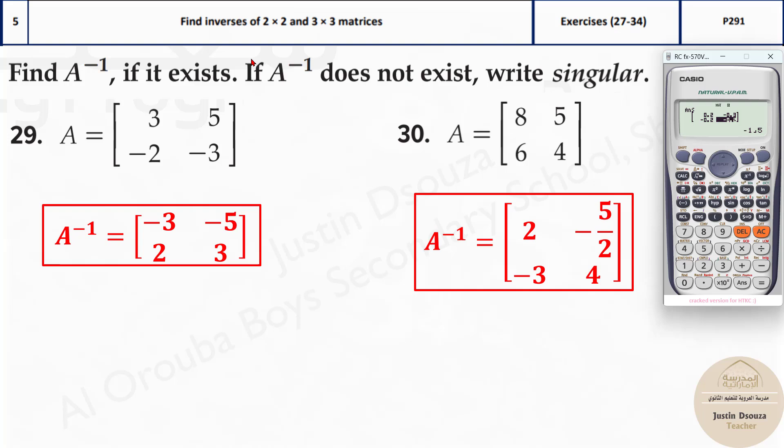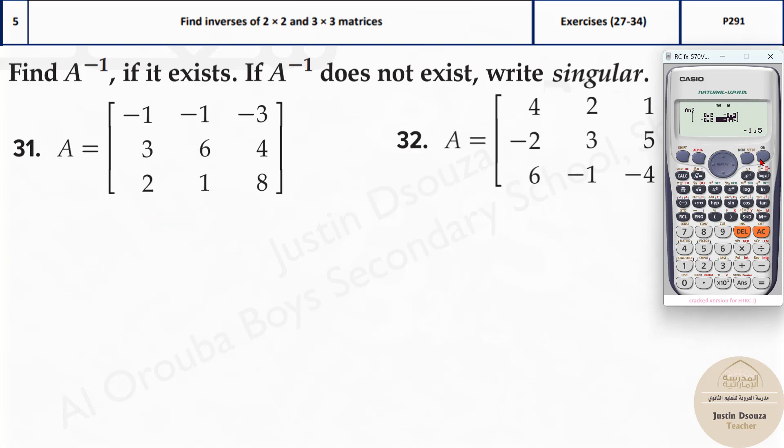Even if it is a 3 cross 3 matrix, it's the same method. Please do this by yourselves. And I'll do one 3 cross 3 matrix. I will just clear it out over here. Now, once I clear it, I can't press shift and 4. It doesn't work because I need to go to mode and 6 for the first time.